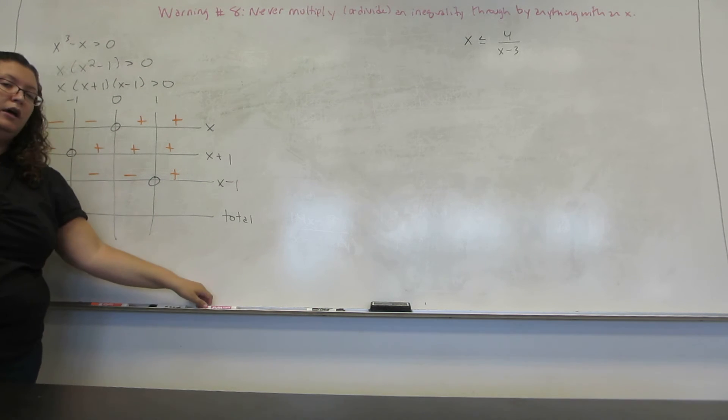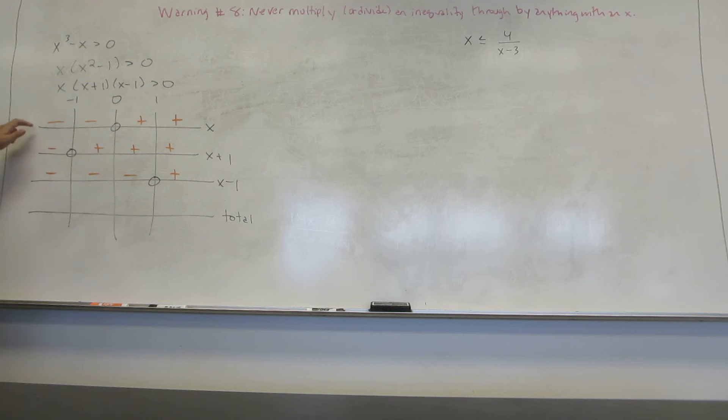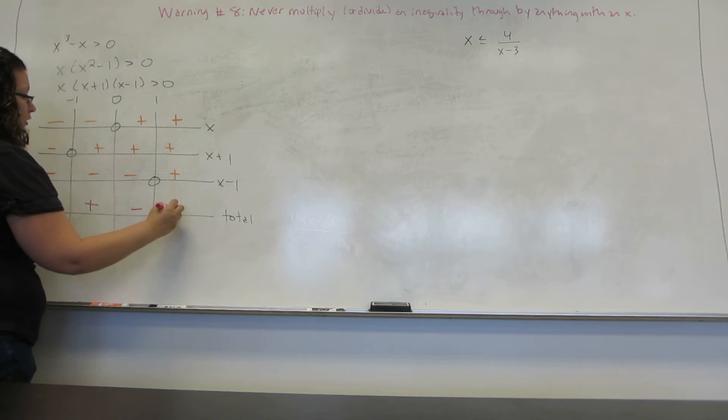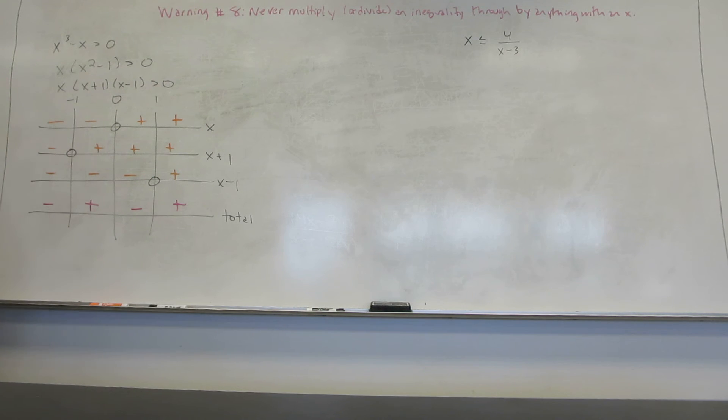Now the final line, the total, is composed by multiplying these three. If I multiply three negative numbers, I get a negative number. If I multiply two negative numbers and a positive number, I get a positive number and so forth. You see that all that you really need to pay attention to is the number of negative numbers to decide if the total is going to be positive or negative.